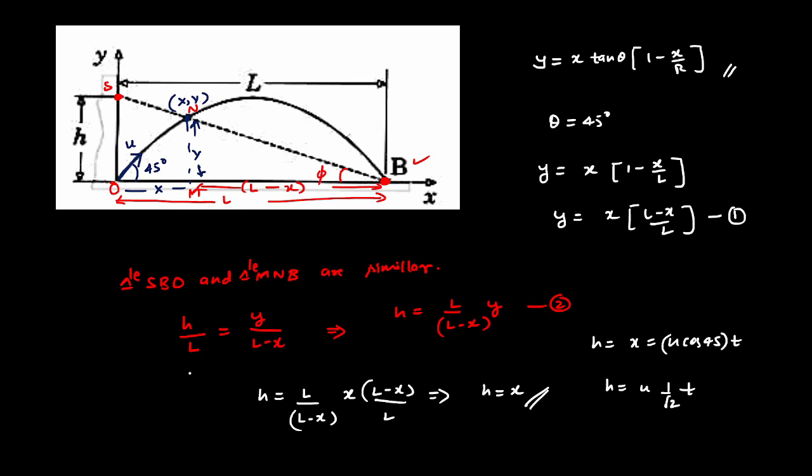Anyhow, we know that we are throwing at an angle of 45 degrees. Since we are throwing at an angle of 45 degrees, we have the value of u to be root of gl. Root of gl and 1 by root 2 times t. So the conclusion is h is going to be root of gl by 2 times t.